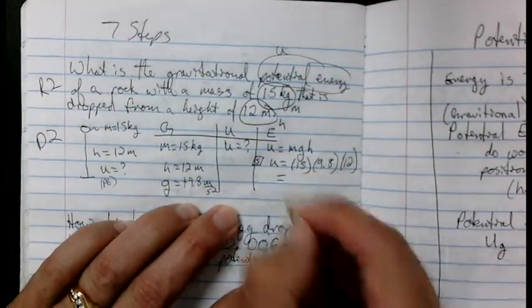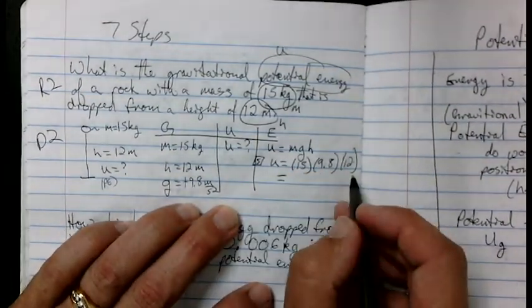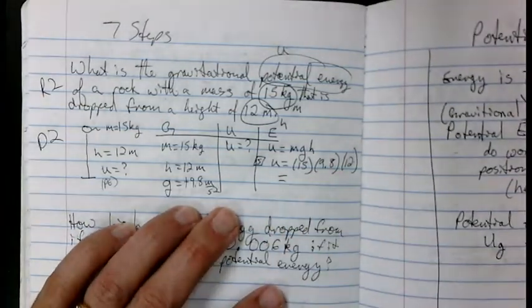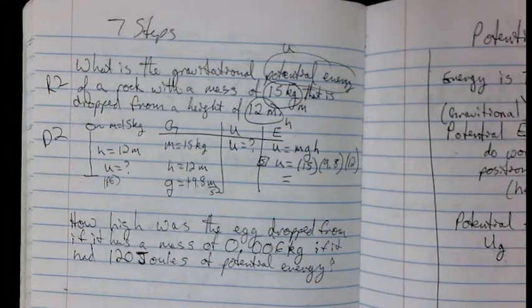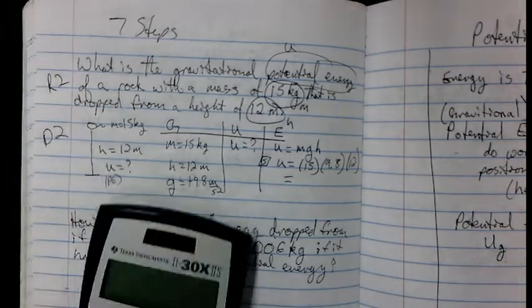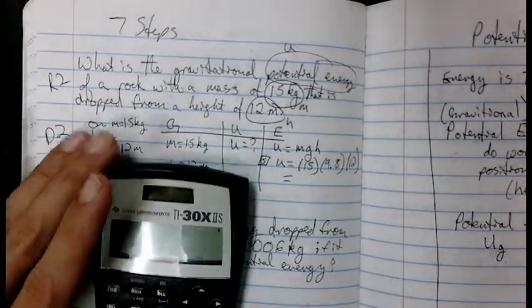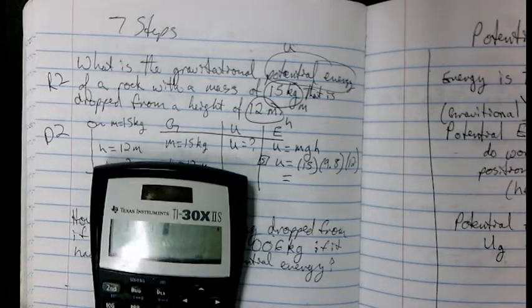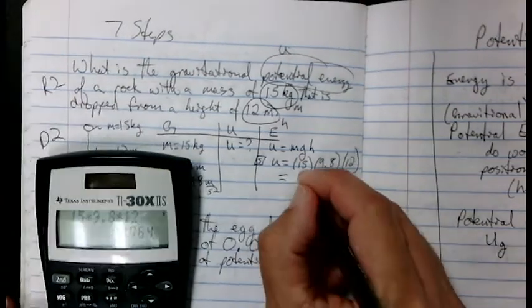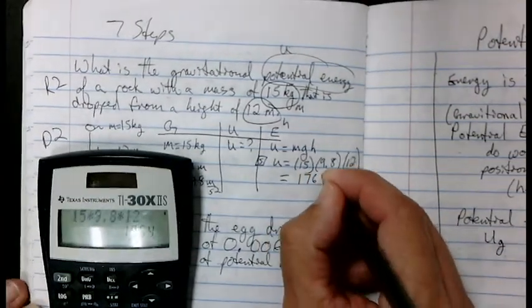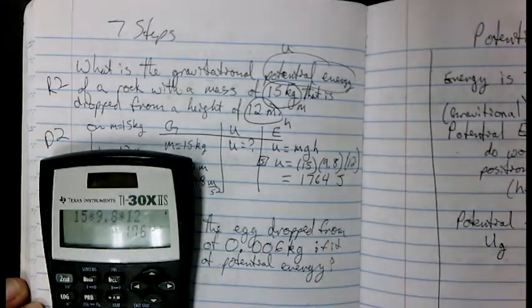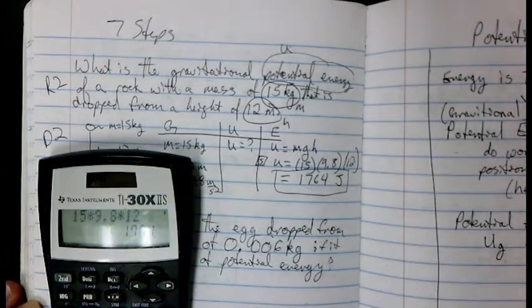And now we just plug it in our calculator. 15 times 12 is 180 times 10, so you're going to get 1,800-ish. So let's get the calculator and check the math that I did in my head. So 15 times 9.8 times 12. 1764. Pretty close to 1,800. What's the units? Potential energy. The unit is the joule. So there is my answer.